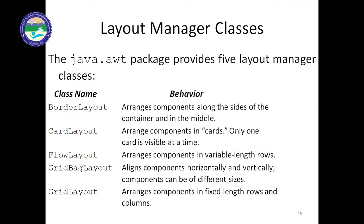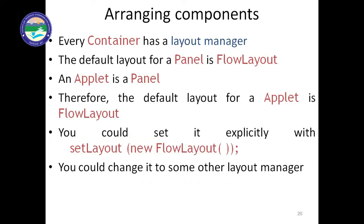These five different layout managers in Java AWT allow us to arrange elements or components in different orders. The default layout for a panel is flow layout, and since applet is also a panel, the default layout of an applet is also flow layout. Using setLayout(), you can pass new FlowLayout(), new BorderLayout(), new GridLayout(), new GridBagLayout(), or new CardLayout() to change the layout.